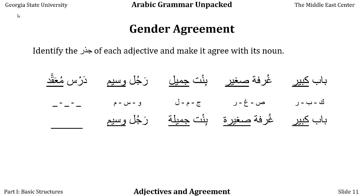Now let's take the last example. Dars is lesson, mu'aqqad is complicated. It's a little difficult to find the jidhr of this adjective. Remember that the meem on the beginning of a word often belongs to the word's wazn, not its jidhr — which is the case here. So our jidhr is 'ayn-qaf-dal, the root for knot. Dars is masculine singular, so we don't have to change mu'aqqad. Dars mu'aqqad, a complicated lesson.